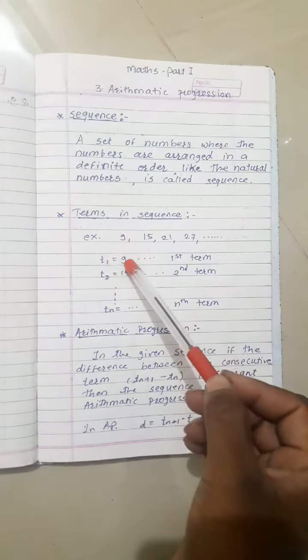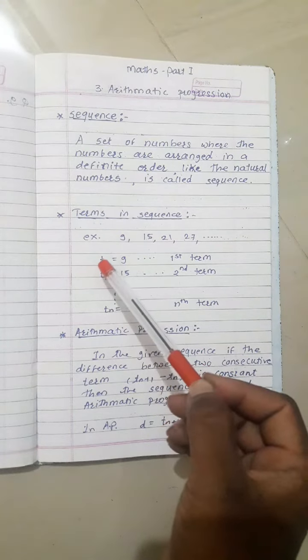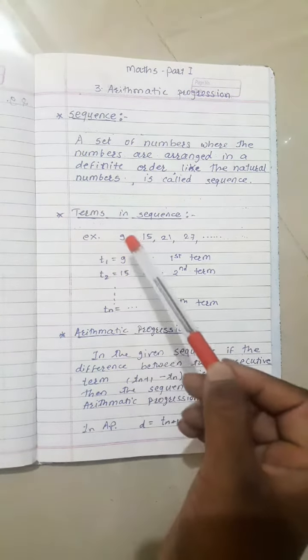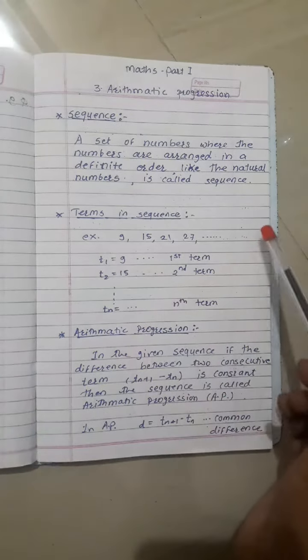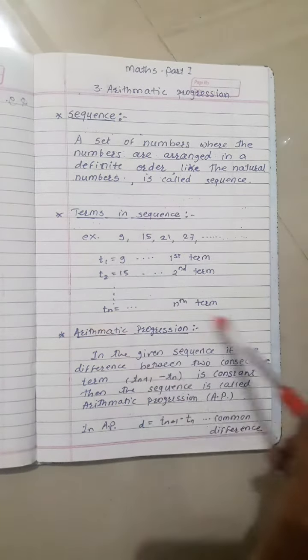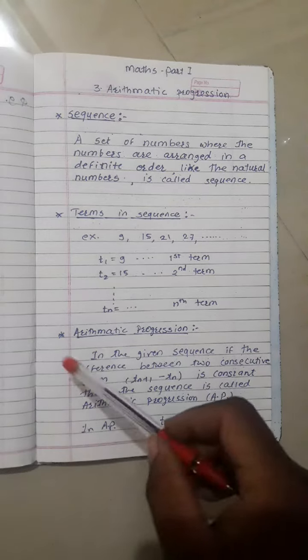The first term is t1, second term is t2, third term is t3, and so on. The last term is the nth term. Now the definition of Arithmetic Progression.